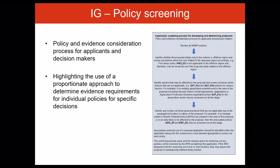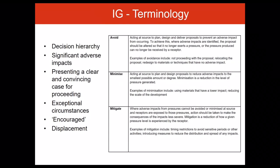The introductory chapter considers the application process for developing and determining proposals and gives process diagrams. On the slides is an example which shows a method of policy screening, showing the sequential process of reviewing and identifying policies relevant to a proposal and the effective screening out of policies which are not relevant. It also considers the use of proportionality in this process, highlighting that a proportionate approach should be applied in determining the evidence to be provided for individual policies in relation to a specific decision, together with consideration of scale, type and location of the proposal along with the level of risk posed. There is a section on terminology which goes into detail on the avoid, minimise, mitigate decision hierarchy, providing definitions of each of the terms and examples for each one.